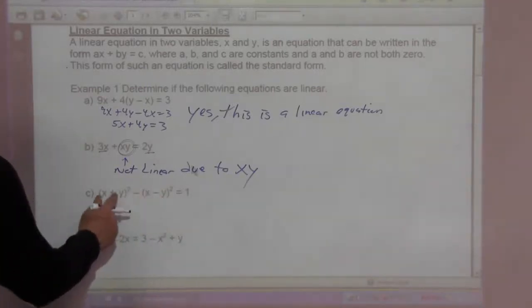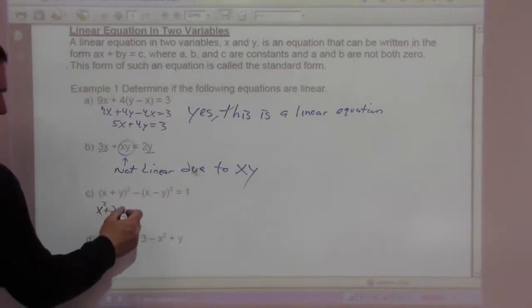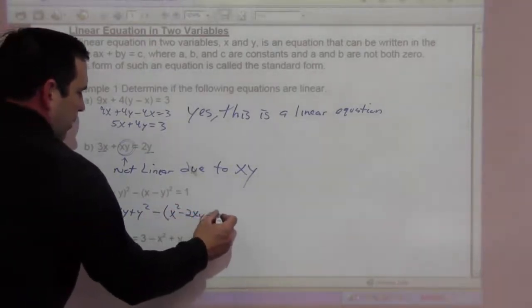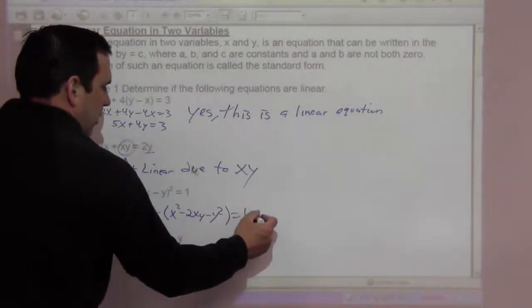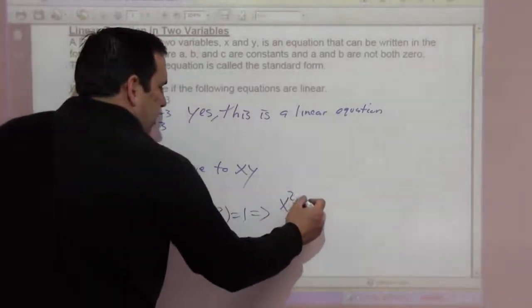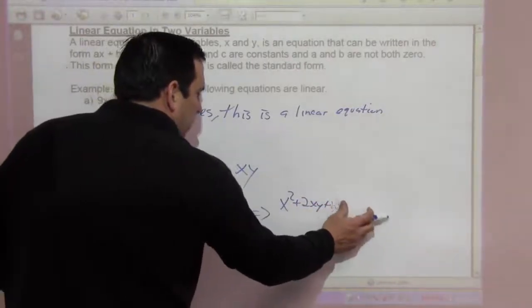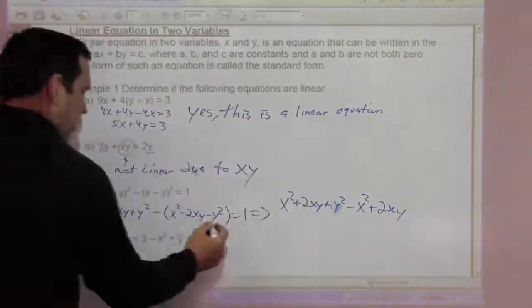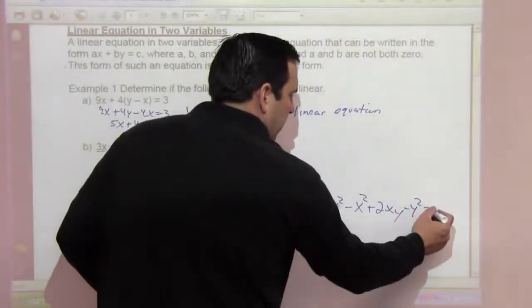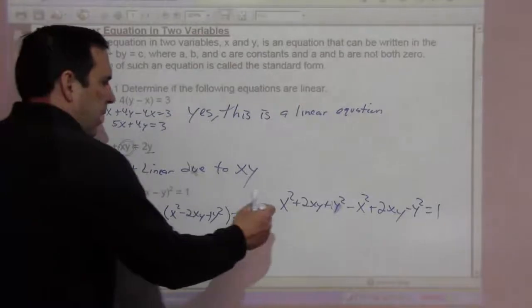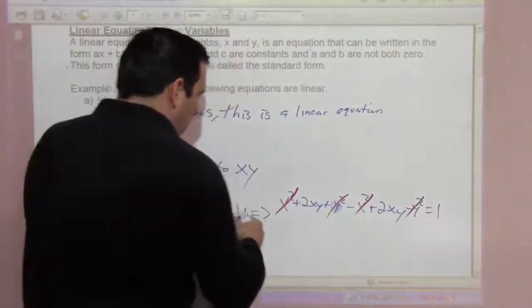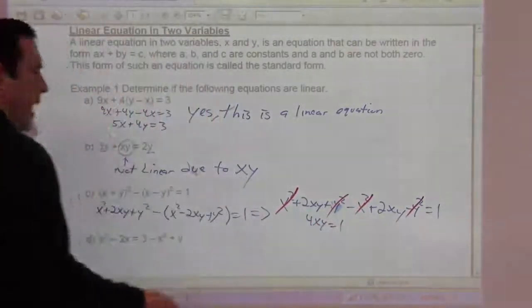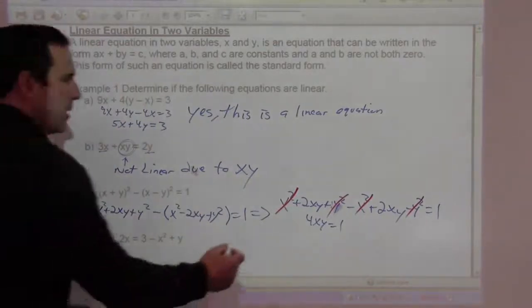Let's look at c. If we expand this, it's x² + 2xy + y² minus the quantity x² - 2xy - y² equals 1. Some things will go away, x² go away, y² go away, but we're still left with 4xy equals 1. And for the same reason as the previous problem, this is not linear.